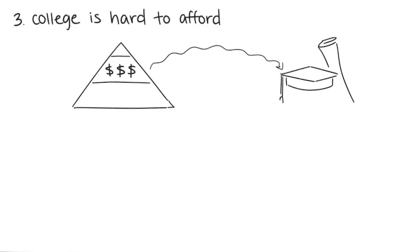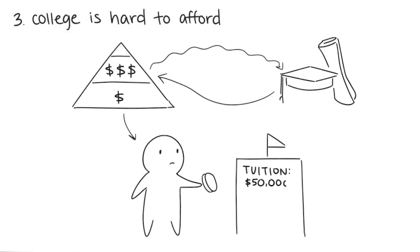3. College is hard to afford. It's hard to earn a college degree with a middle class wage, but it's often advertised that you'll need a college degree to earn at least a middle class wage. People from the lower class want to go to school for a better life, but are often unable to afford it. In addition to paying for college, many people end up in debt from student loans.